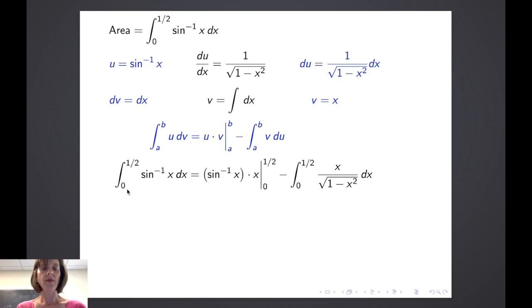So we'll deposit the pieces and we get the integral from 0 to 1 half of the inverse sine of x dx is equal to the inverse sine of x times x evaluated from 0 to 1 half minus the integral from 0 to 1 half of x divided by the square root of 1 minus x squared dx.